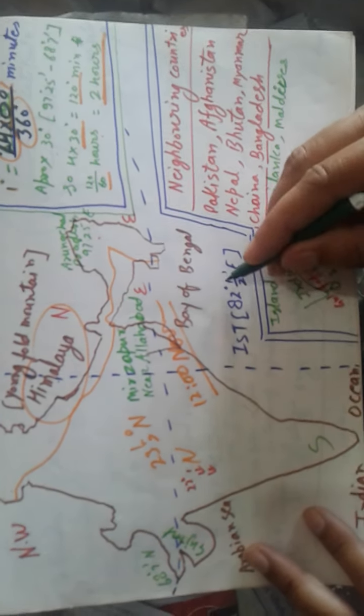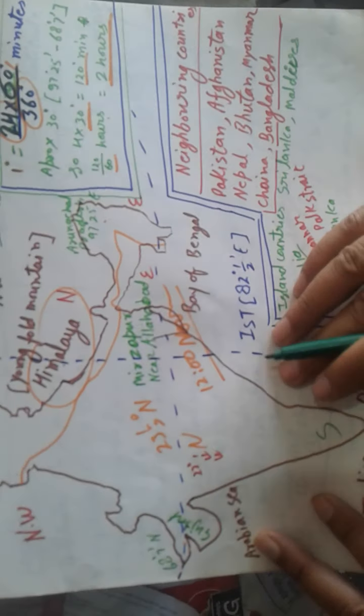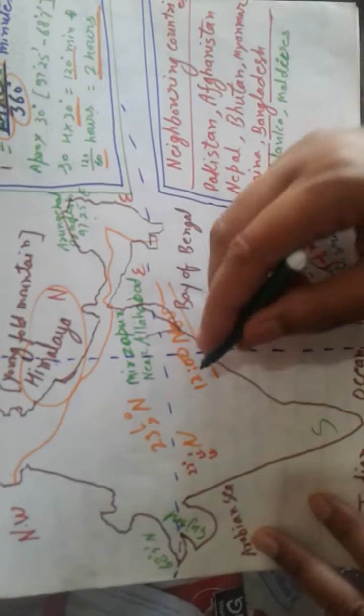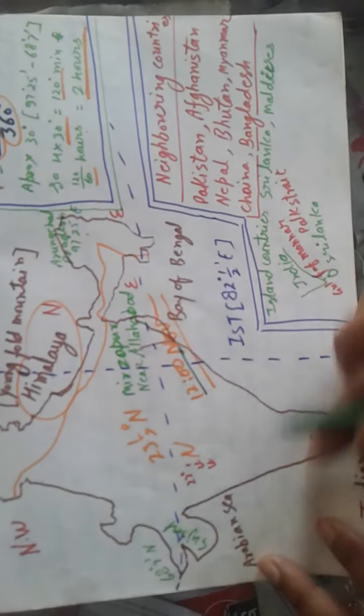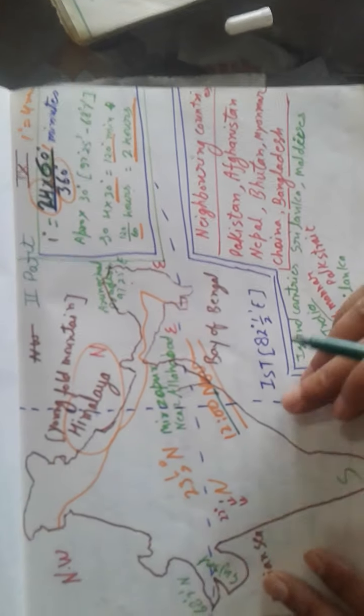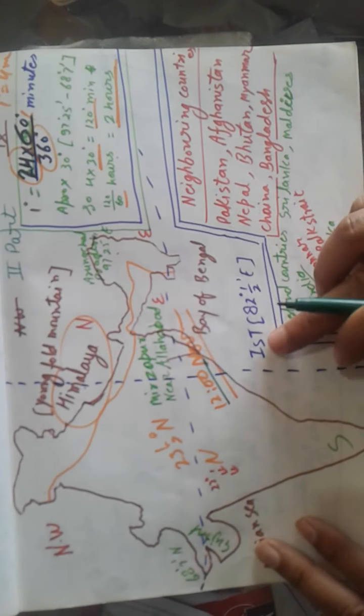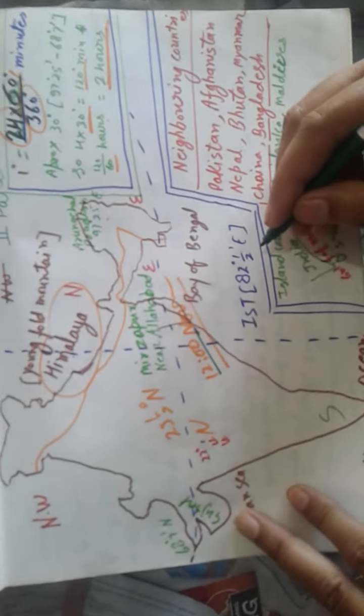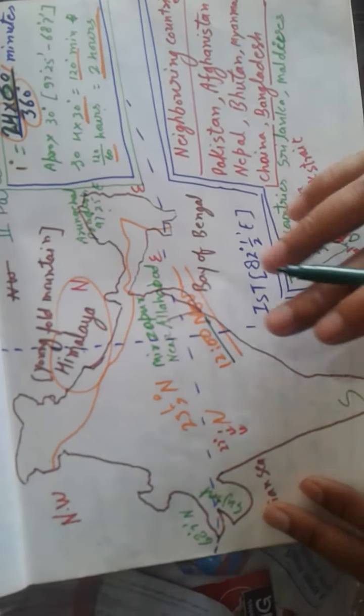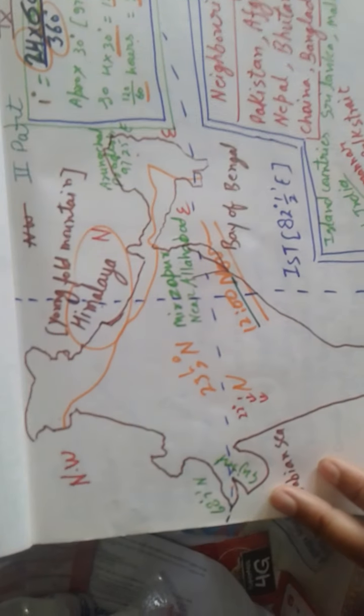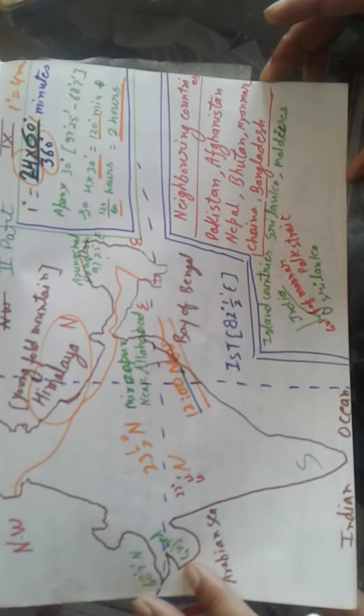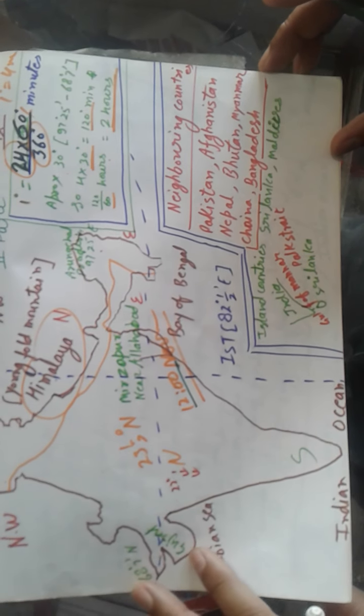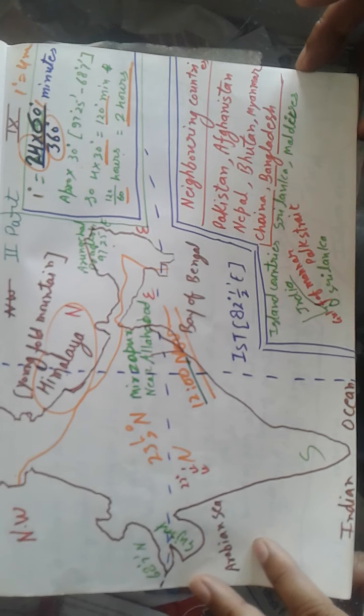India follows a standard time meridian of 82.5 degrees East, which passes through Mirzapur near Allahabad. This standard meridian provides uniform time for the entire country.